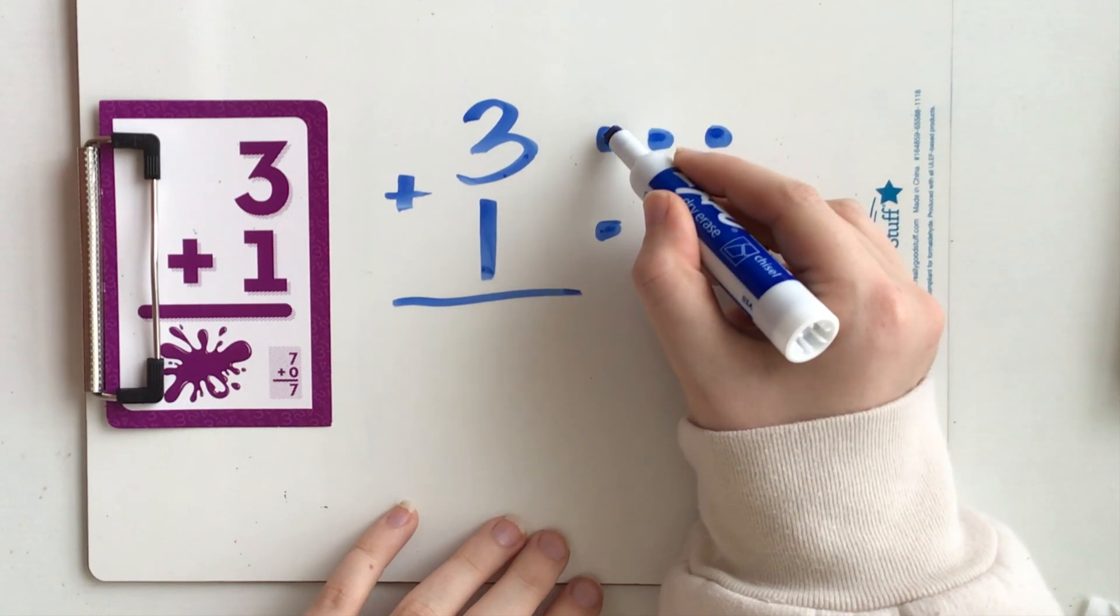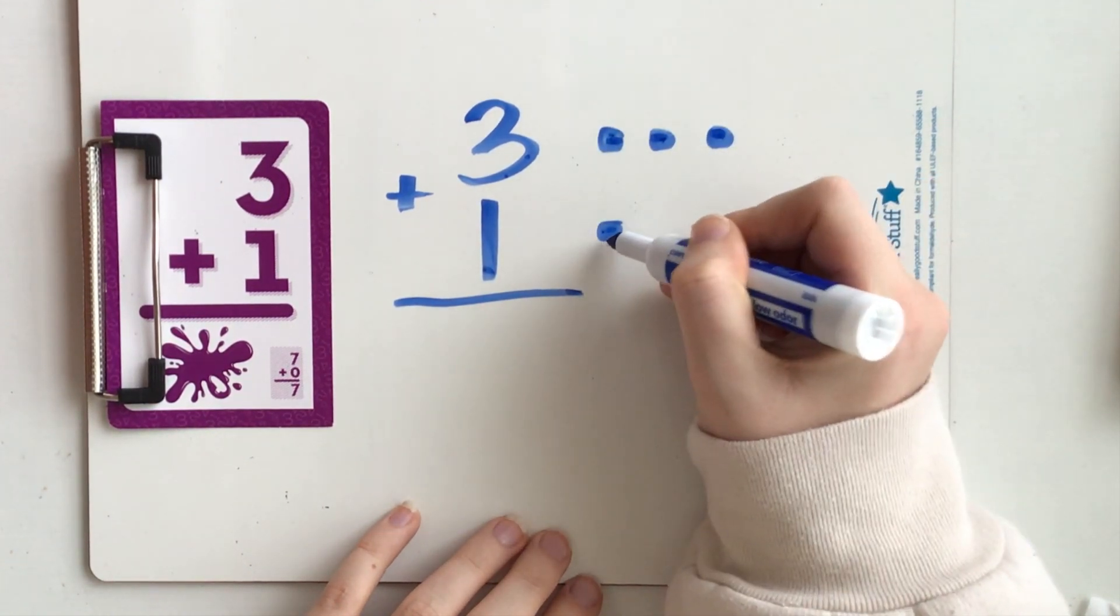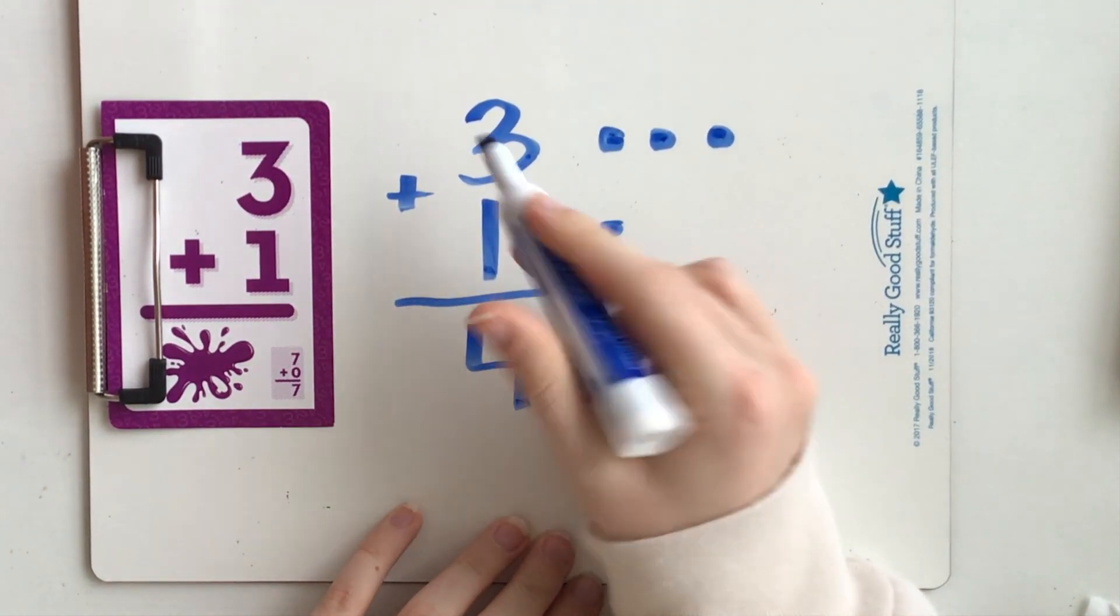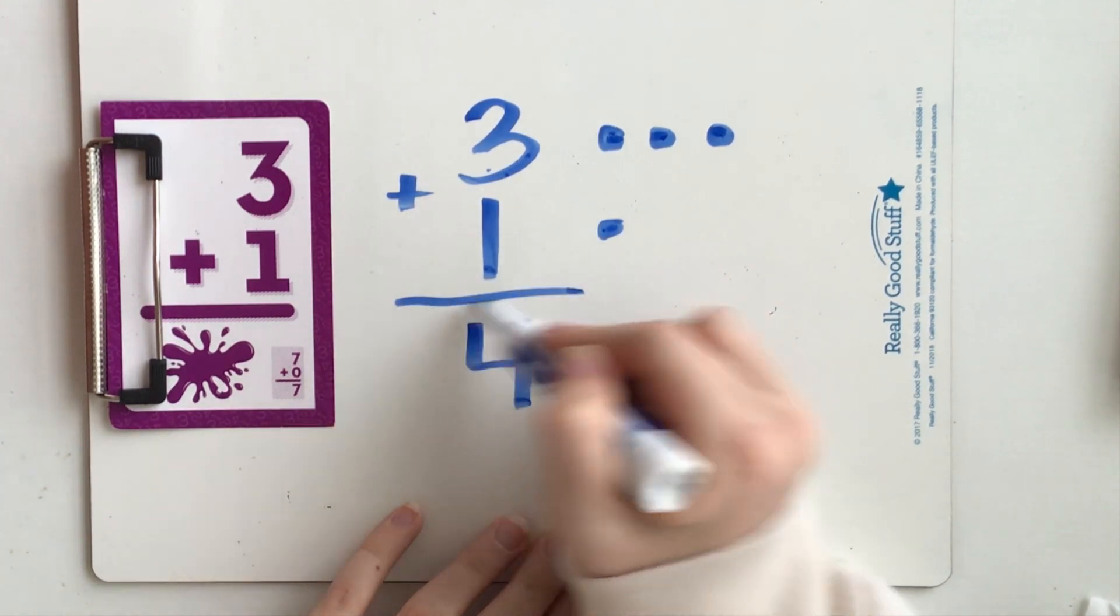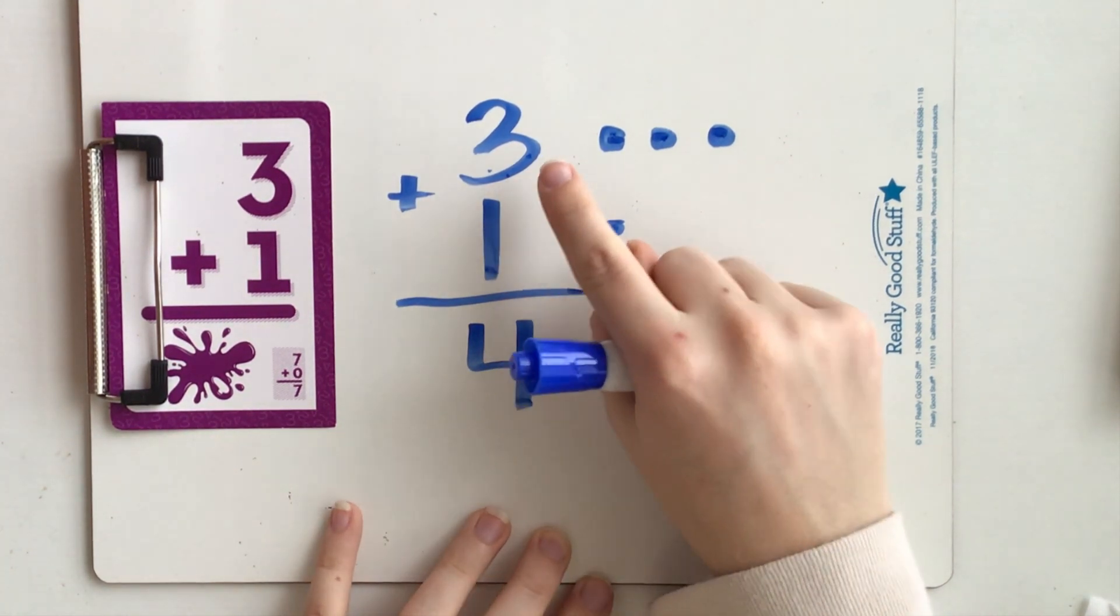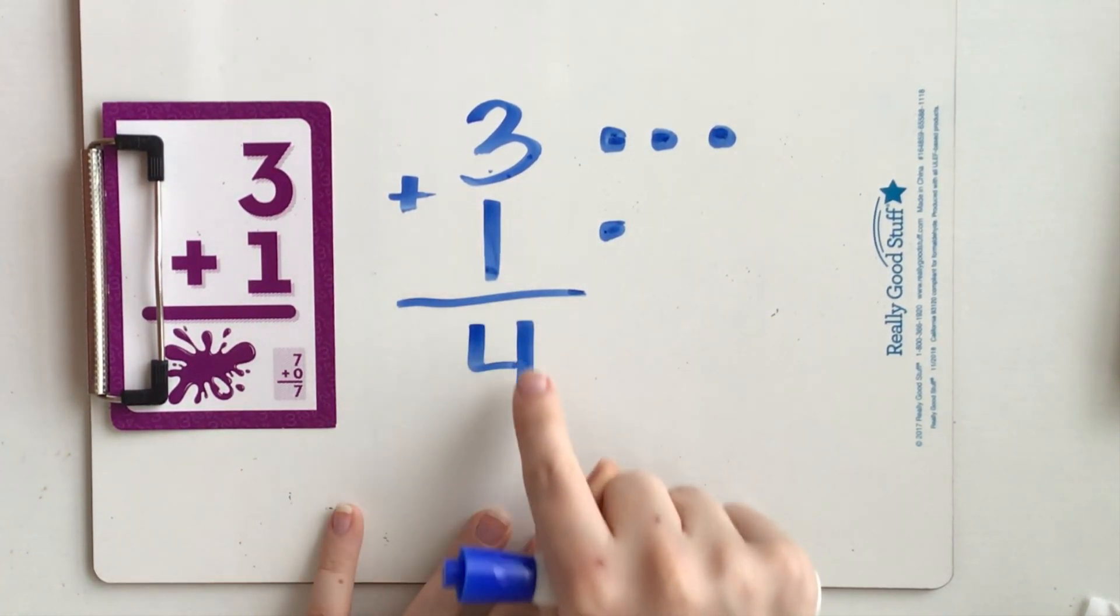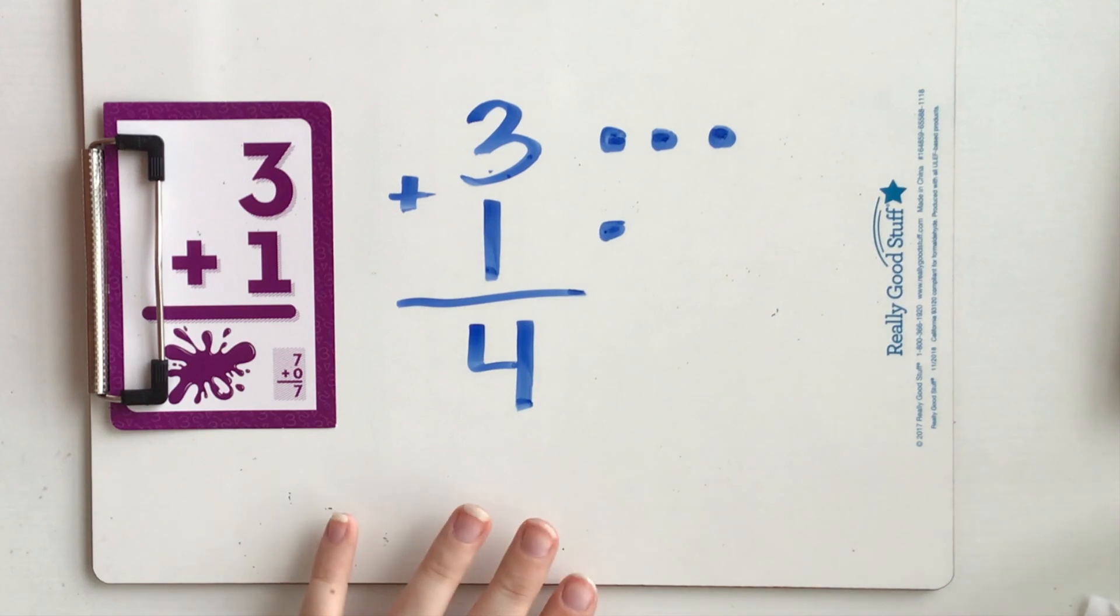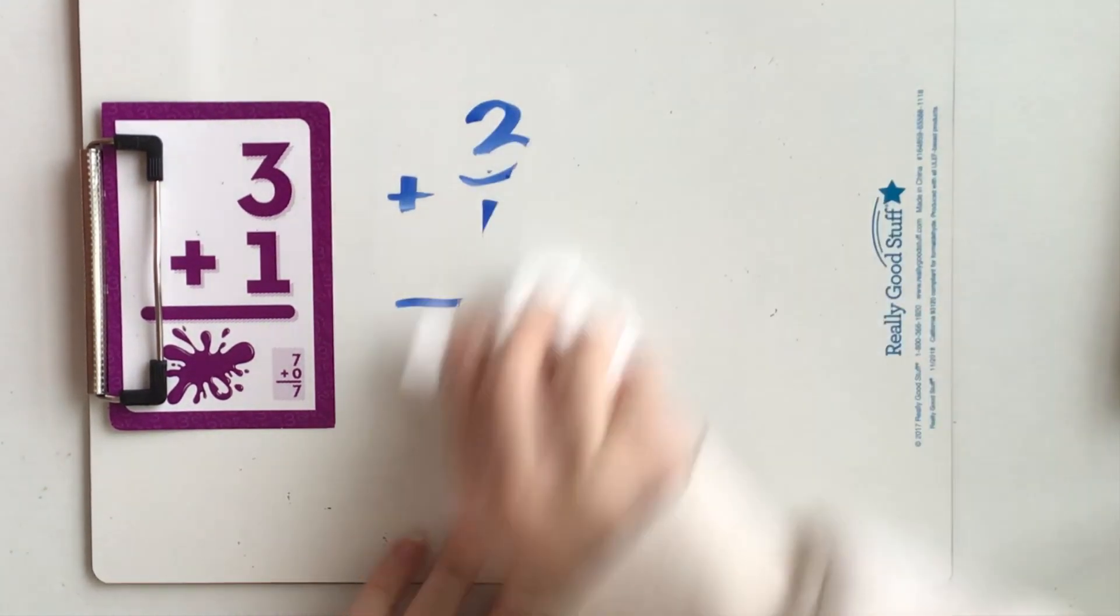Now I add them up. One, two, three, four. Three plus one equals four. Now after I solve these problems I want you to make sure you're saying along with me. Three plus one equals four. So we can get in the habit of reading those problems out loud.